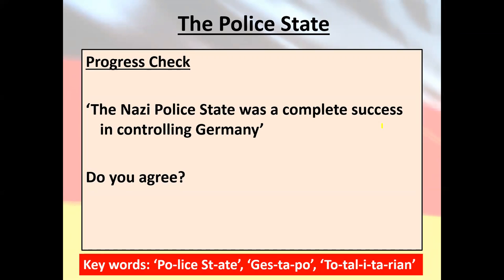To recap: have a go answering this question and checking your progress. Do you think, having looked at what you've looked at today and evaluated some of the sources, that the police state was completely successful in controlling Germany — or not? Explain why. One of the lessons we're moving on to soon is opposition to the Nazi Party, so if you want to read ahead in your textbooks to help you answer this question, please do so.